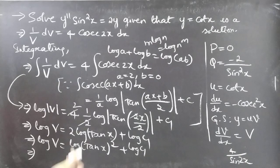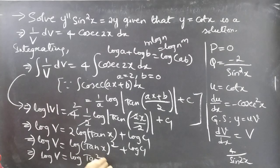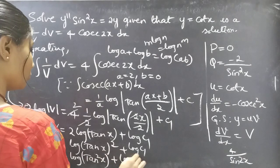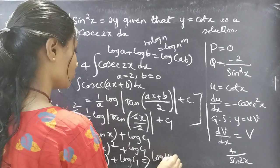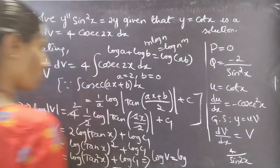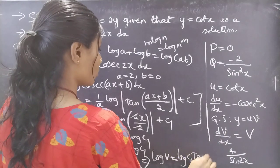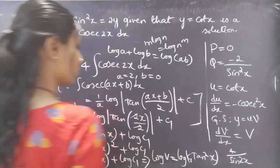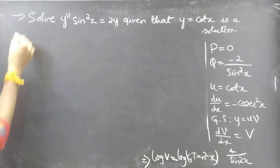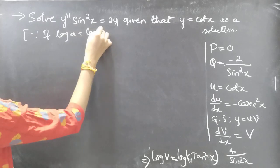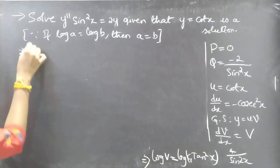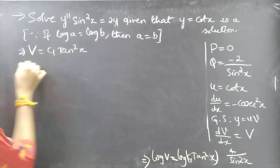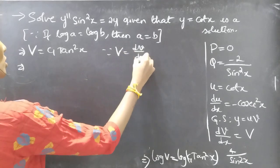Simplifying: log(tan x)² as log tan²x. Since if log a = log b then a = b, we get V = C₁ tan²x. Since capital V = dv/dx, replacing V: dv/dx = C₁ tan²x.